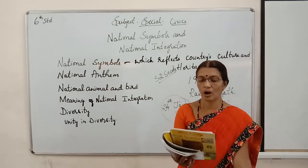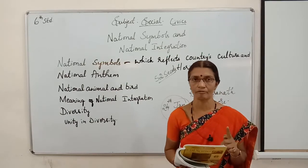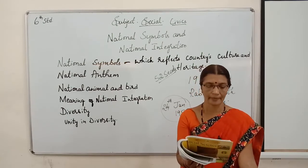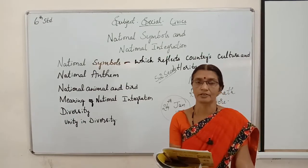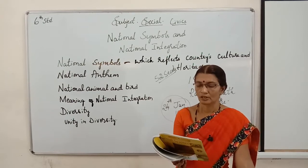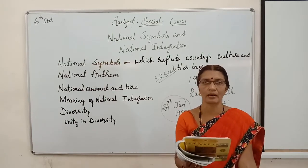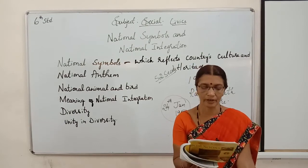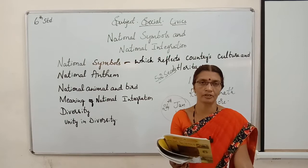Every citizen is moved heartily when the flag is raised to the pole. Whenever you hoist the flag, it must be raised up to the top of the pole, not halfway. Our tricoloured National Flag of India comprises three colours: saffron at the top, white at the centre, and green at the bottom. At the centre of the white colour, there is a blue colour wheel. The wheel contains 24 spokes, and its radius fits within the white colour band.